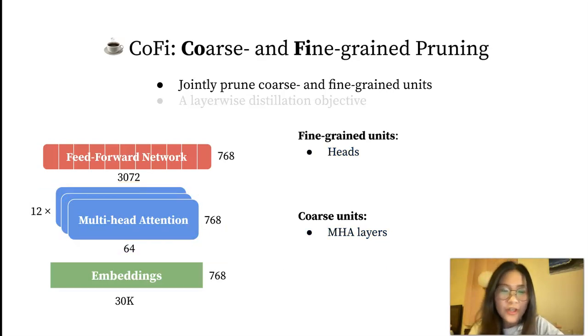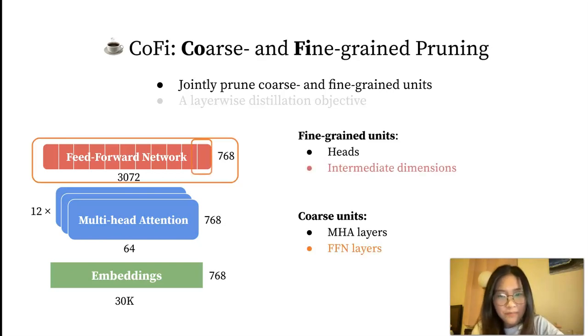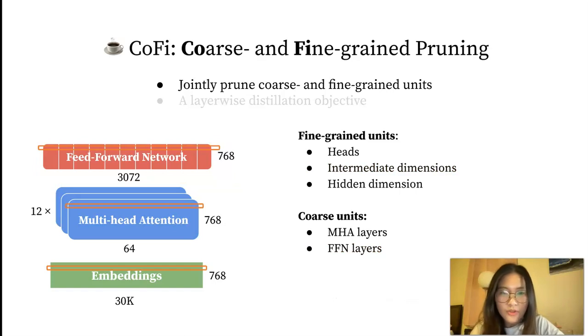Similarly, CoFi encourages pruning the fine-grained units, the intermediate dimensions, as well as the feed-forward networks, which is modeled by two sets of feed-forward mask variables. There is one dimension that persists through all matrices in the model, the hidden size. In the BERT-based model, it's 768, and we propose to prune it as well. As a result, a single parameter in any weight matrix is controlled by three masking variables.